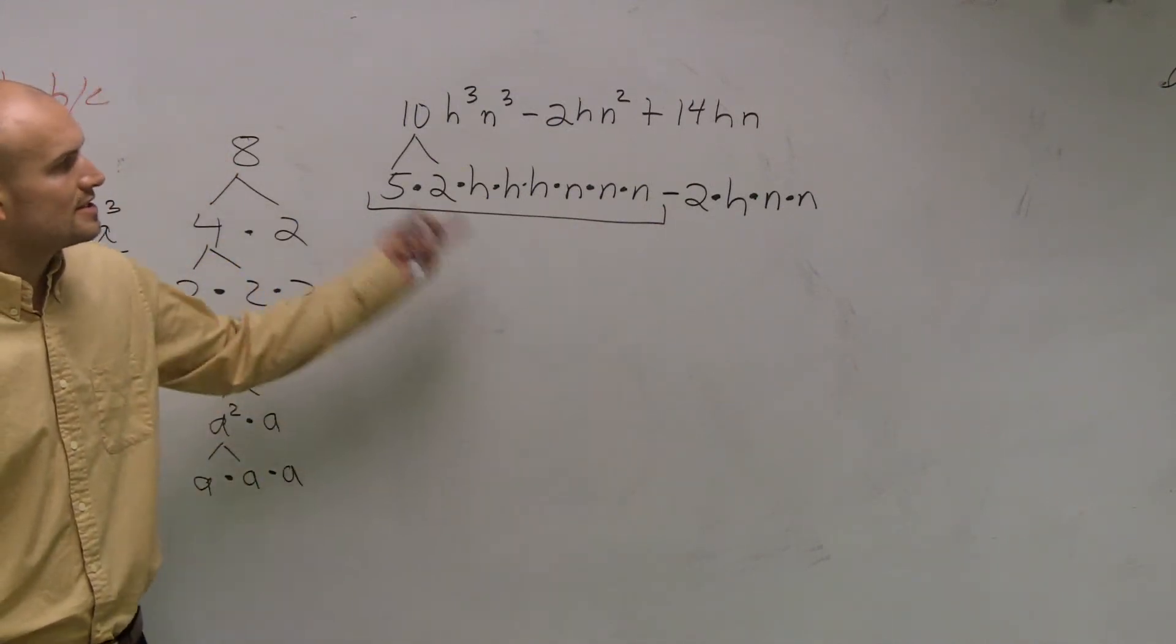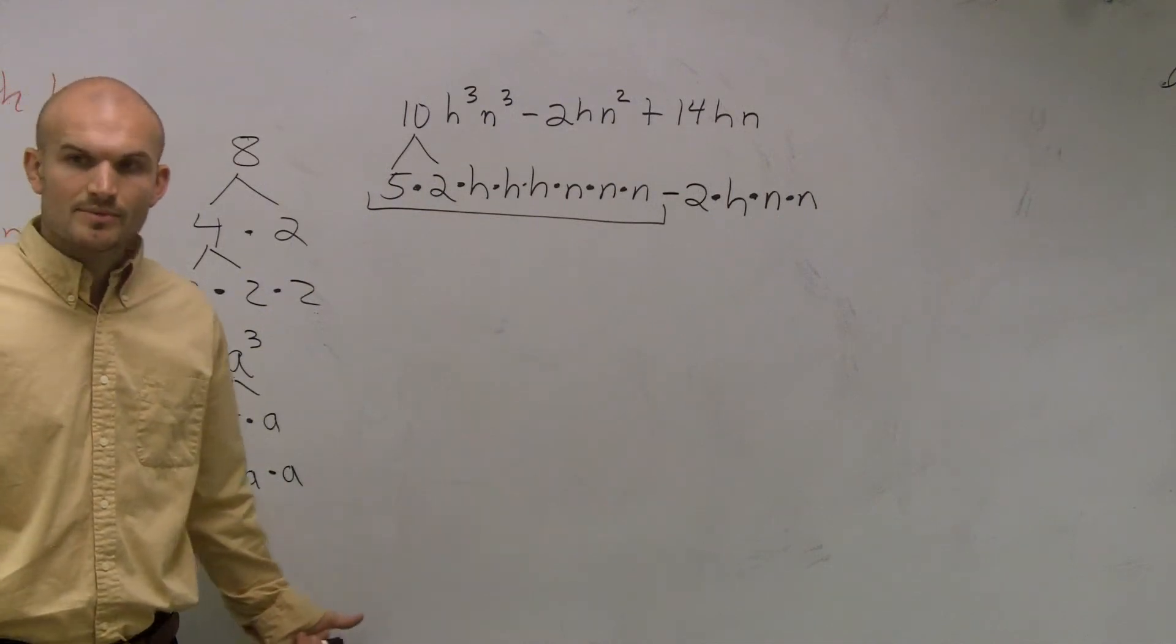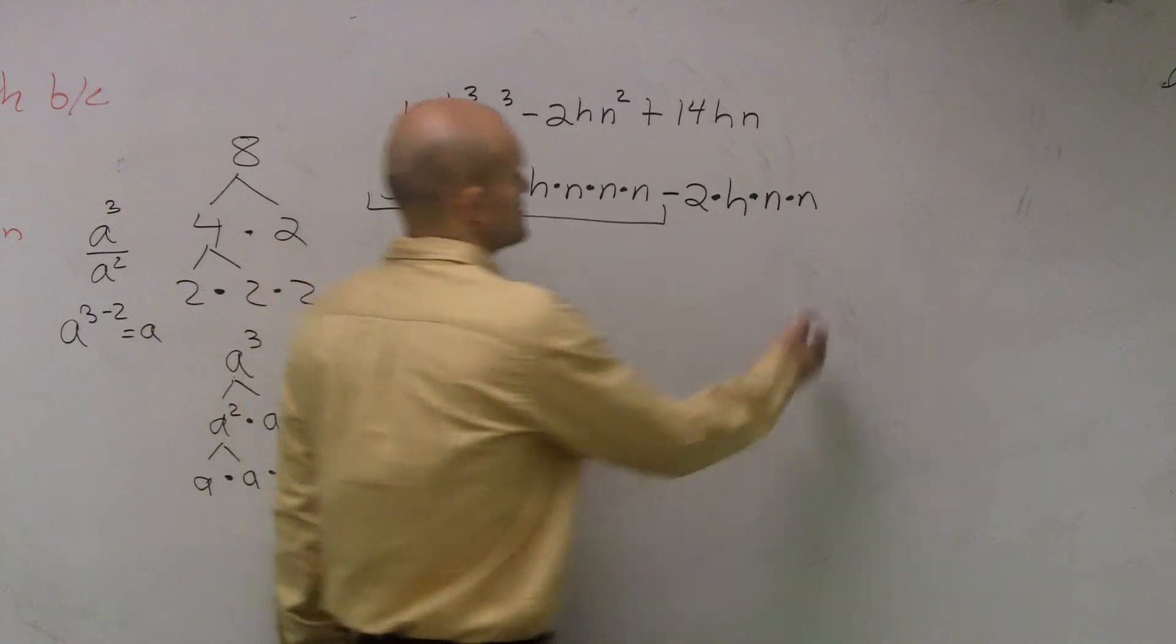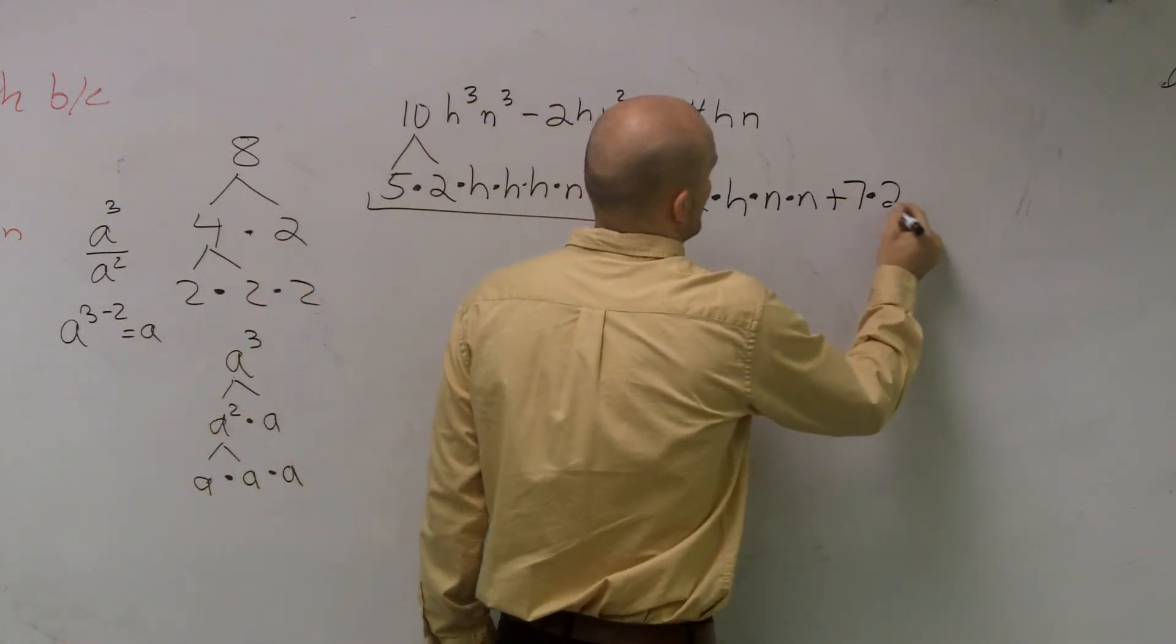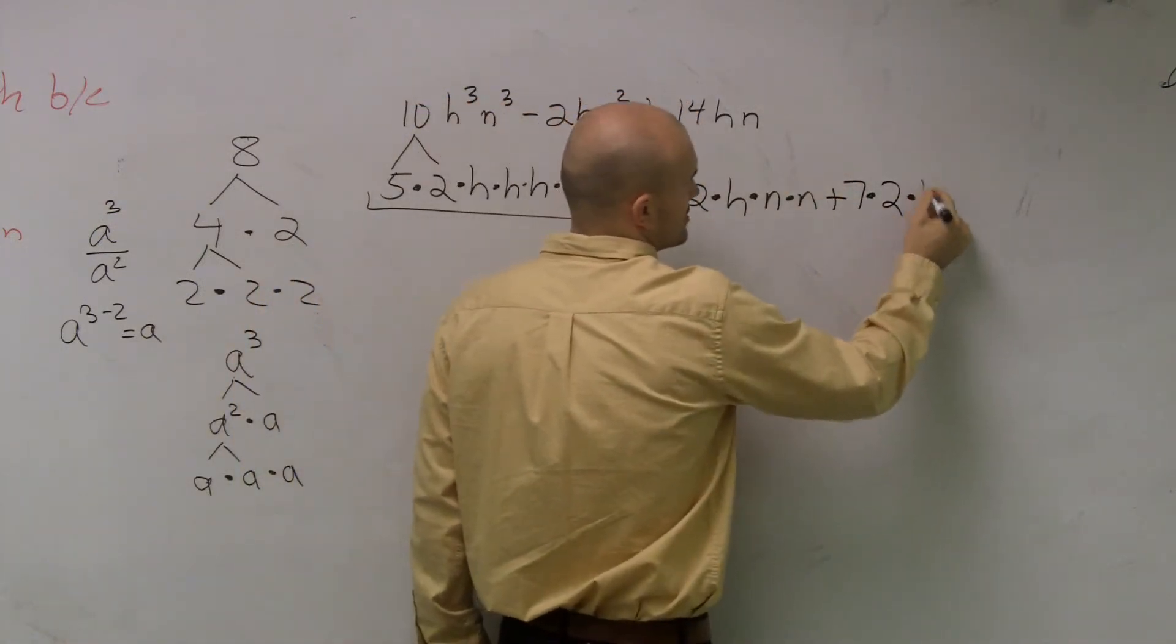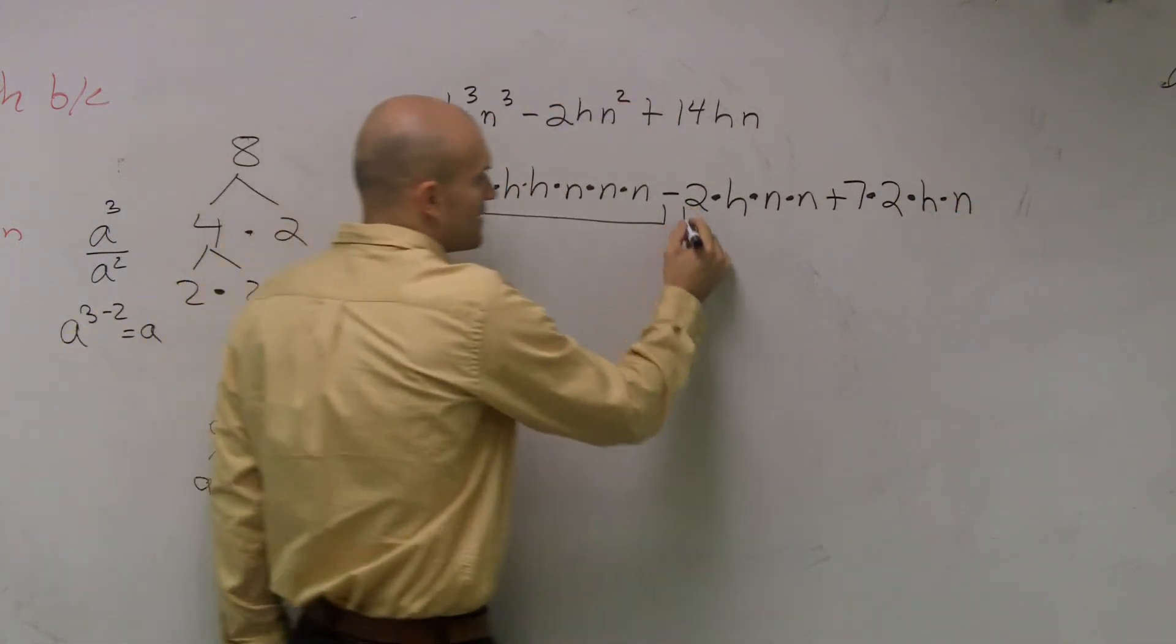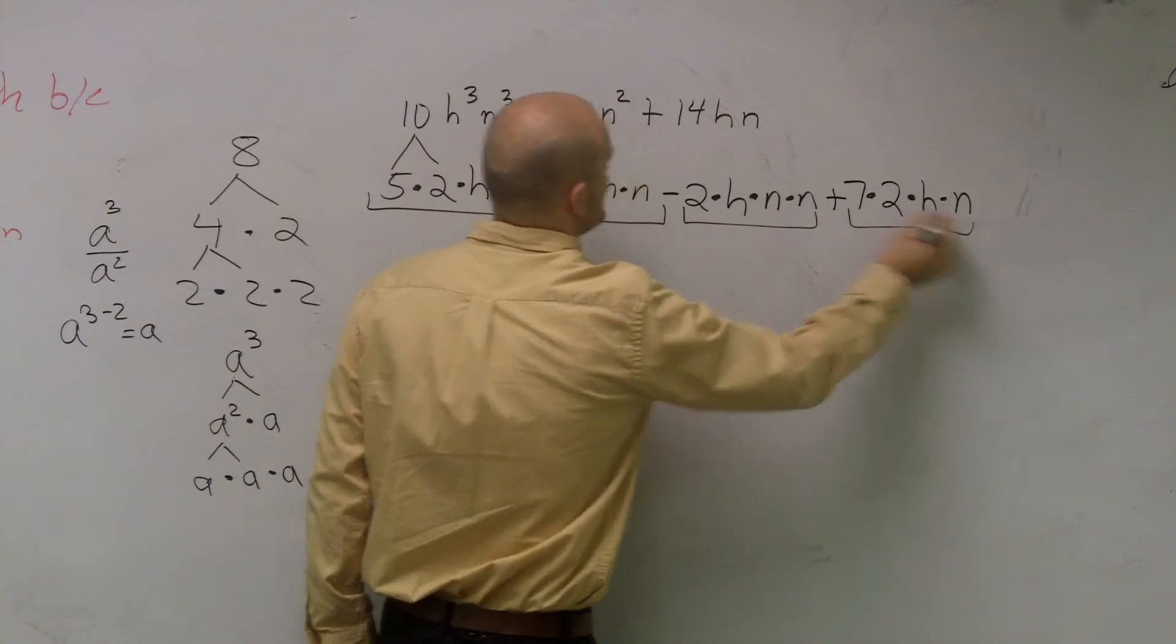So the next one is 14. Is 14 a prime number? No. No, we can rewrite that as what? 7 times 2. That's 2. Very good. And then h and n, right? Because those are obviously the primates we talked about. So when we are, so right now we have three terms that I just factored out.